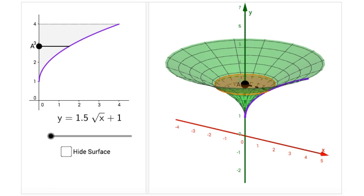On the left side of the interactive figure we see the graph of the function, in this case y equals 1.5 times the square root of x plus 1, graphed between y equals 1 and y equals 4. This is the region that we are going to rotate around the y axis using the disk method.